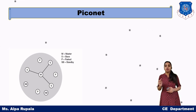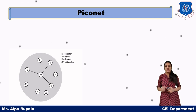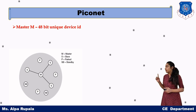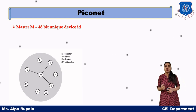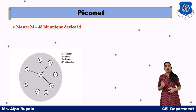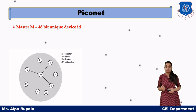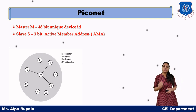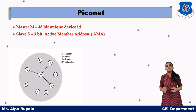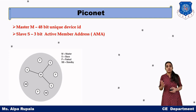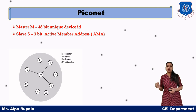The maximum capacity is one master and seven slaves. If any park device wants to communicate with the master, it needs to replace one of the slaves, and that replacement will be according to the synchronization of the hopping sequence. The master has a 48-bit unique identification number, which is given to all slaves for synchronization of the hopping sequence. We have a total of 7 slaves because each slave is identified by a 3-bit active member address, also known as AMA.